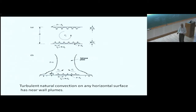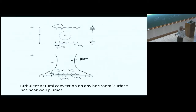In the same sense that next to a wall in turbulent pipe flow, turbulent channel flow, and turbulent boundary layers the flow looks almost alike — it's sort of universal. So in that sense, turbulent convection on a horizontal surface in different situations will be similar near the wall. The outer flow of course would be different.